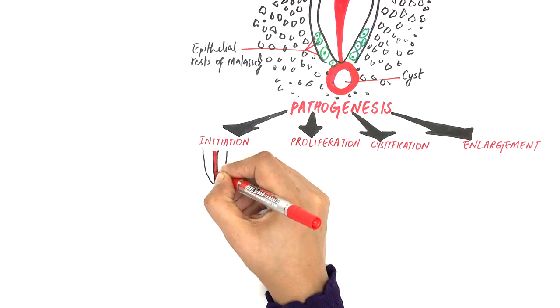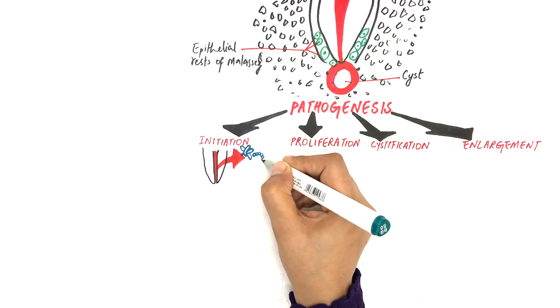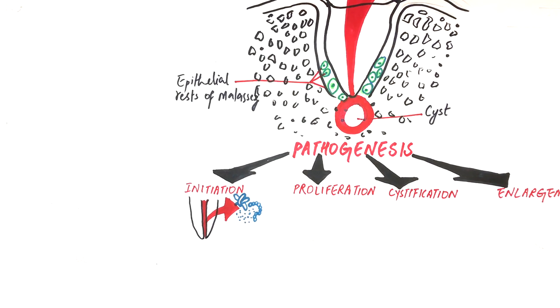In the initiation phase, the bacteria or the inflammatory cytokines from the inflamed pulp stimulate the cell rests of Malassez located near the apex of the associated tooth.